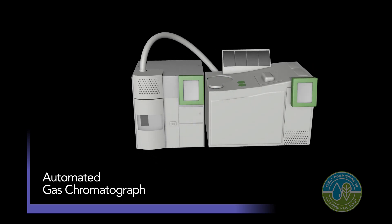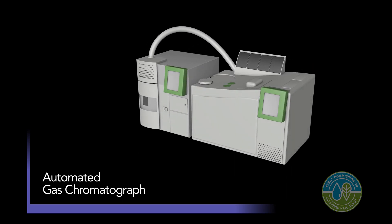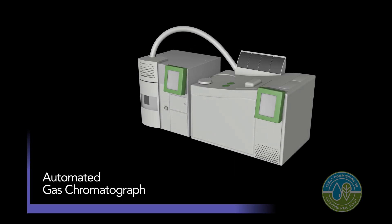An automated gas chromatograph is a continuously running instrument that we use to collect data on 56 individual volatile organic compounds.